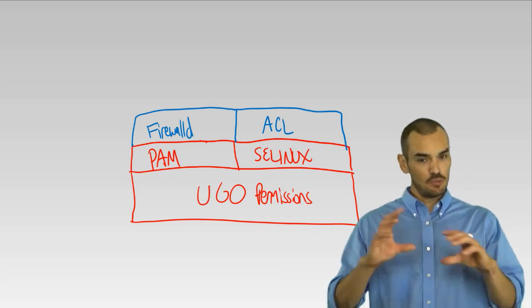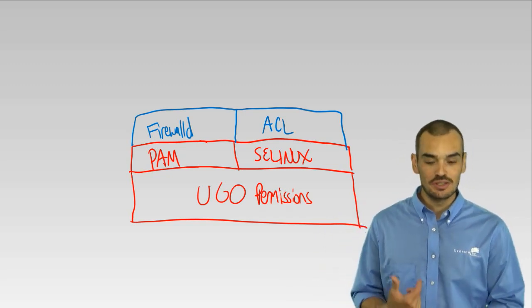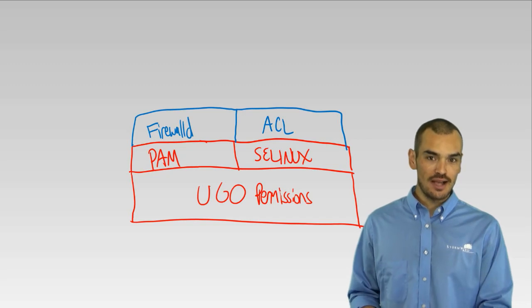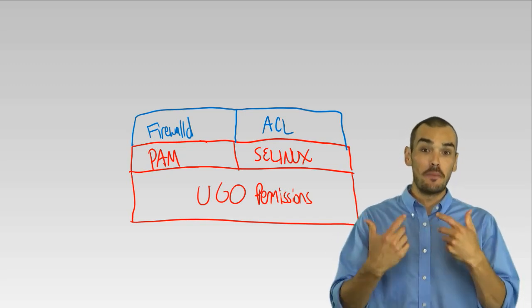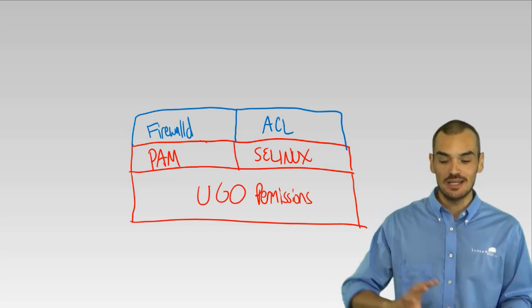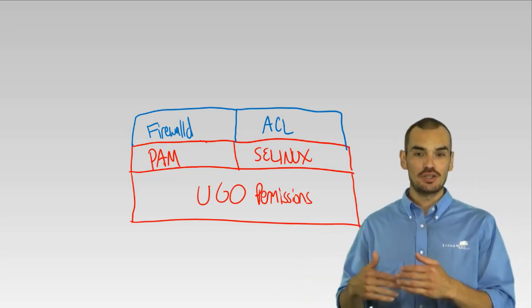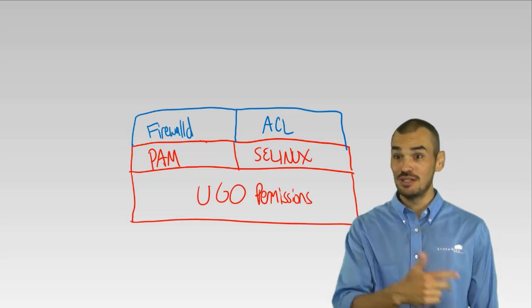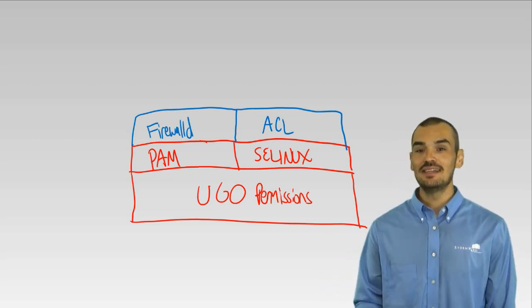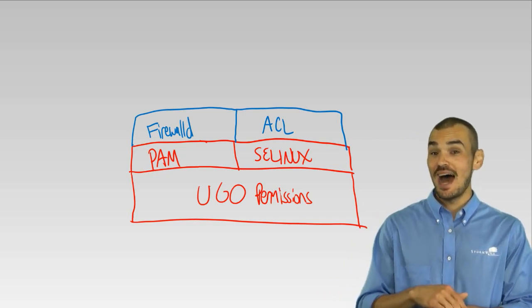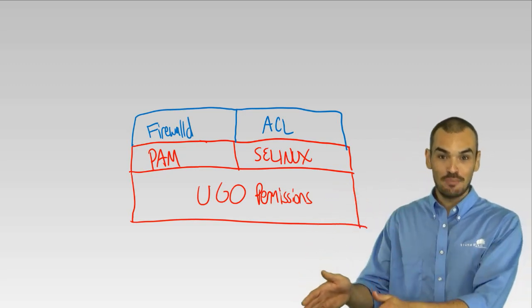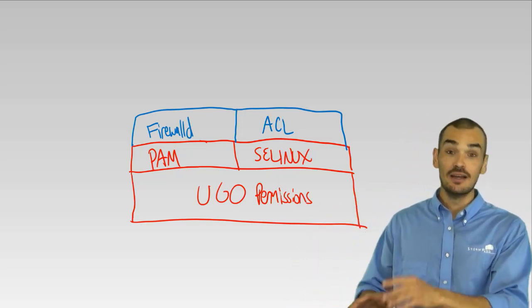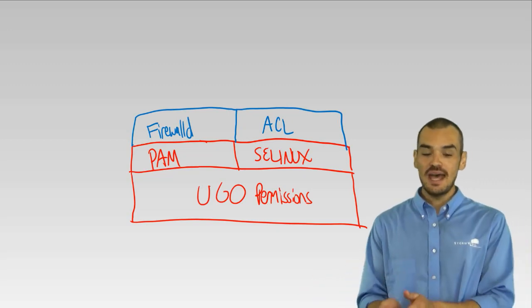The next thing that kicks in, and once again the red represents what happens on the local system, is SELinux, Security Enhanced Linux. Whereas the UGO permissions are discretionary access control, SELinux implements what's called Mandatory Access Control or MAC. If you think about it, UGO permissions are dependent upon who you are. You're either the owner of a resource, you're a member of a group that has access to that resource, or you're somebody else. SELinux looks at it from a different perspective and says, I don't care who you are. This is the type of data. This is the sensitivity of the data. This is what you're trying to do to that data, regardless of who you are. SELinux really kicks in.